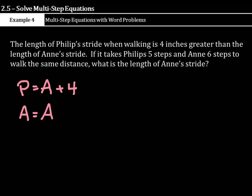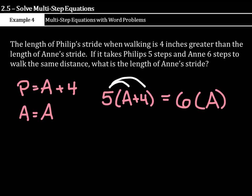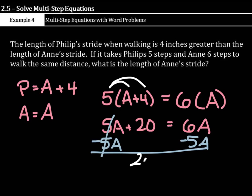Now, if we set up the equation, Philip's takes 5 steps. Well, what are each of his steps? Each of his steps are Anne's plus 4. Then, that has to equal Anne's steps. But she takes 6 steps, and each of her steps are A. Go ahead and distribute. 5 times A is 5A, plus 5 times 4 is 20, equals 6 times A is just 6A. Subtract 5A from both sides. And 20 equals Anne's stride. So, 20 inches. So, for this type of problem, we said Philip's was Anne's plus 4. Anne was Anne. We know 5 of Philip's strides has to equal 6 of Anne's strides, and we distributed and solved the equation.